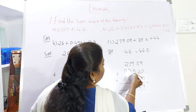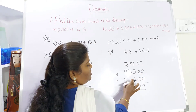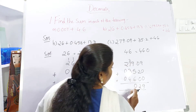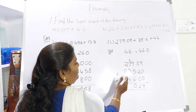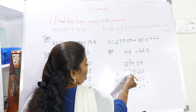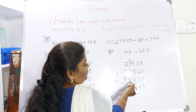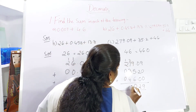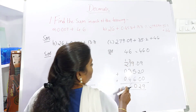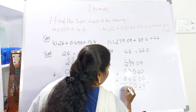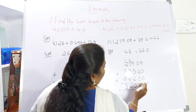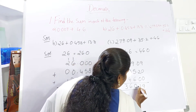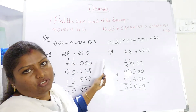Now 9 plus 5 is 14, 14 plus 6 is 20, so 2 is carried over and 0 is written here. Now 7 plus 3 is 10, 10 plus 4 is 14, 14 plus 2 is 16, so 1 is carried over and 6 is written here. Then 2 plus 1 plus 1 is 3 (with the two carried-over digits). Decimal point is after 2 digits, so count 1, 2 and place the decimal point. Hope you have understood decimal addition.